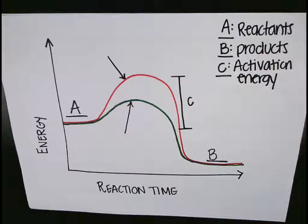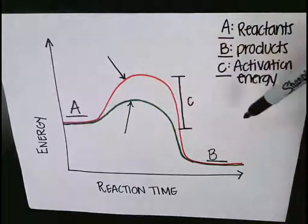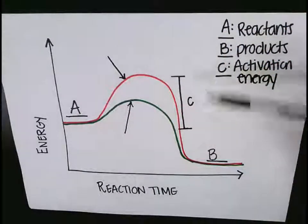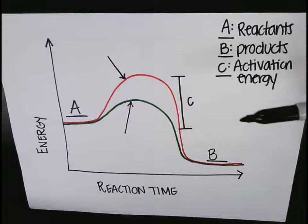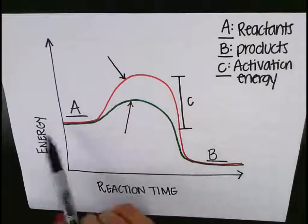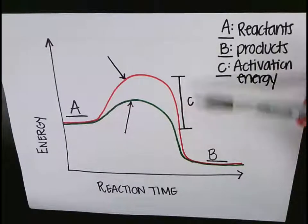When we are looking at this graph, there are two separate lines. They both have the same amount of reactants, they both have the same amount of products, but they have different amounts of activation energy. How an enzyme works is it speeds up the reaction by lowering the activation energy. It still has the same reactants, it still has the same products, it just has a different activation energy.